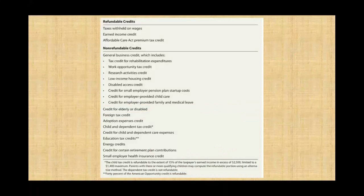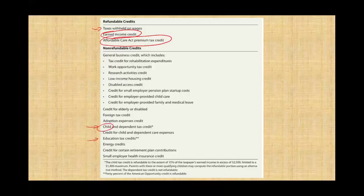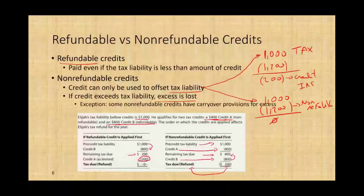Here is a list of refundable and non-refundable credits. Refundable credits include taxes withheld on wages (though that is more accurately thought of as tax withholding), the earned income credit, the Affordable Care Act premium tax credit, part of the child tax credit, and part of the education credit. We're going to be talking about these credits separately — this is just an overview. We'll start with business credits, covering eight or nine of them, then move into personal credits for another seven or eight.